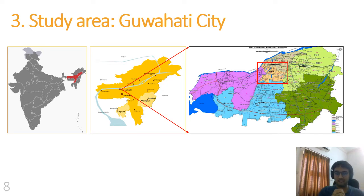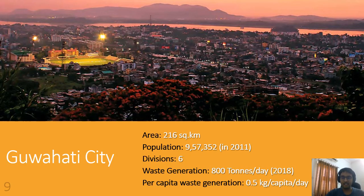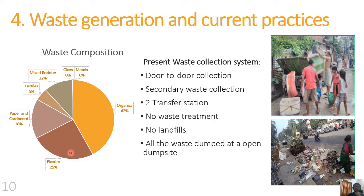The study area is Guwahati city, the largest city in the northeastern part of India. It has a population of more than a million, generating approximately 800 tons of municipal solid waste every day. The waste composition is typical of an Indian city, where the major portion is organics, followed by plastics, paper, and cardboard. The city has a good door-to-door collection system managed by local non-government organizations, which collect waste in segregated form — wet waste (basically organics) and dry waste (a mixture of recyclables and inert waste).